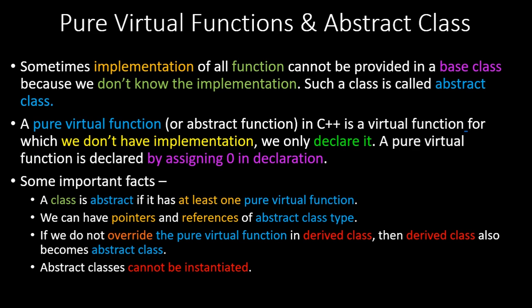We can have pointers and references of abstract classes, but an abstract class cannot be instantiated — we cannot create an object of it, because there is no definition for the function. If we do not override the pure virtual function in the derived class, the derived class also becomes an abstract class.